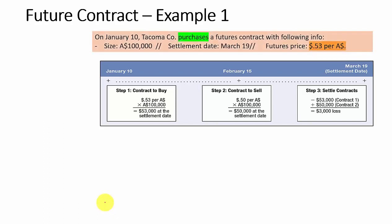Looking at Tacoma's position: on January 10, Tacoma purchases a futures contract and will receive 100,000 Australian dollars at the expiration date of March 19. In exchange, it has to pay 53 cents per unit of Australian dollar — that is, a cash outflow of 53,000 US dollars.